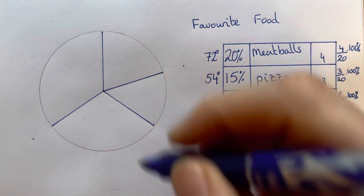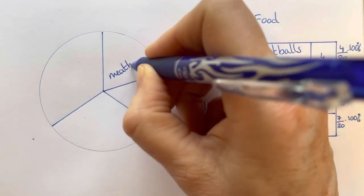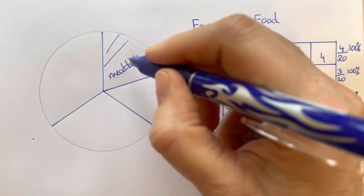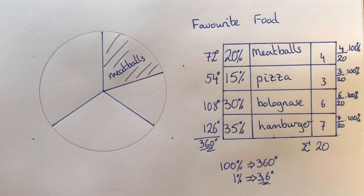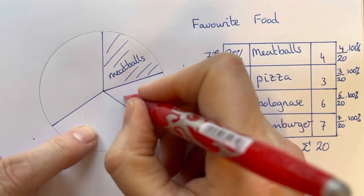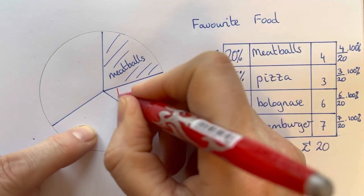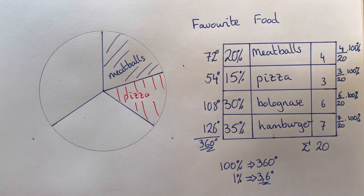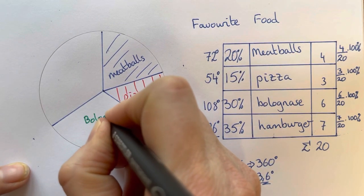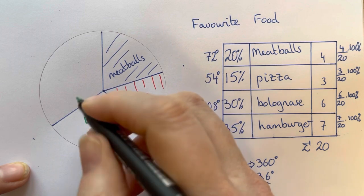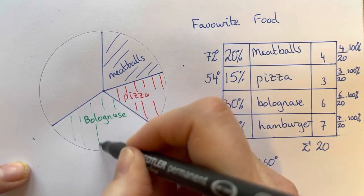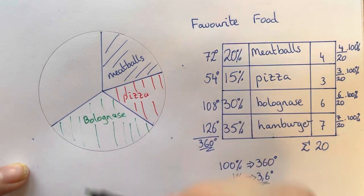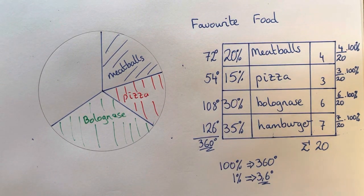So we would have meatballs which we can sketch in blue, and we would have our pizza which we sketched in red. We take our bolognese which we sketched in green, and then our final one was the hamburger that was bright pink.